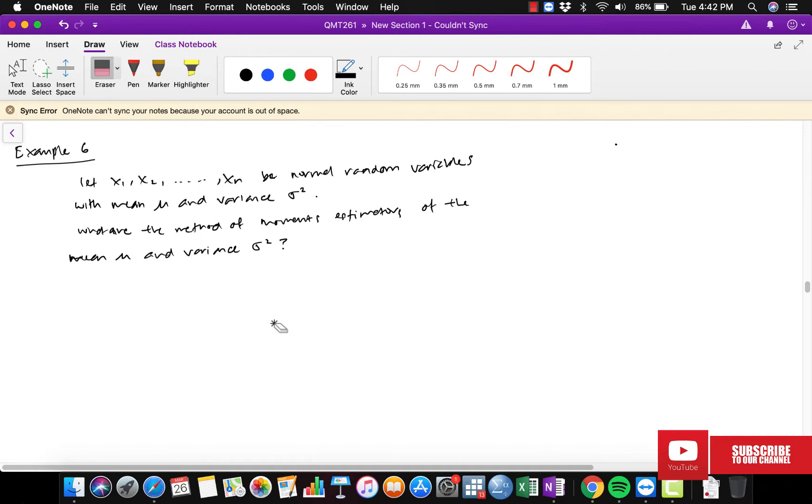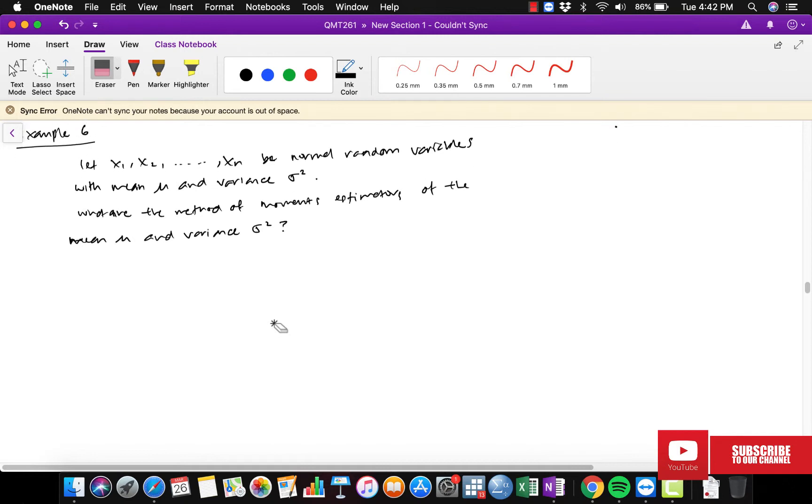Alright, Bismillahirrahmanirrahim, Assalamualaikum. In this video I'm going to show you how to solve a two-parameter estimator using a method of moments. By looking at this example, let X1 until Xn be a normal random variable with mean equal to mu and variance equal to sigma squared.